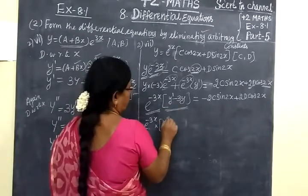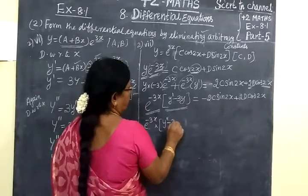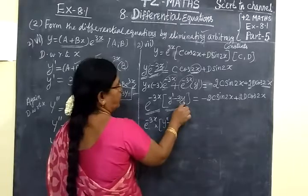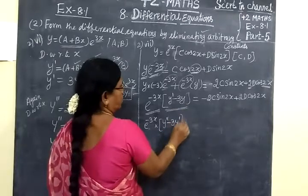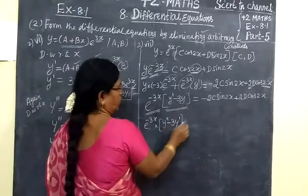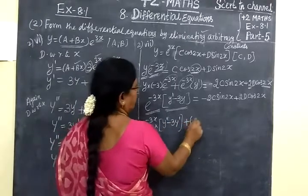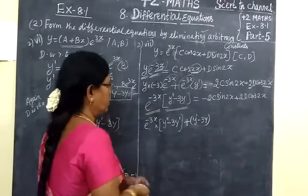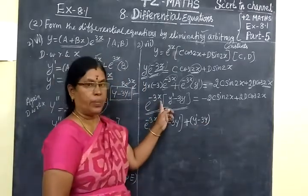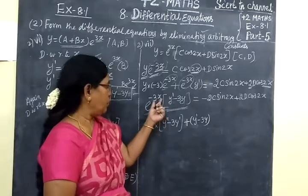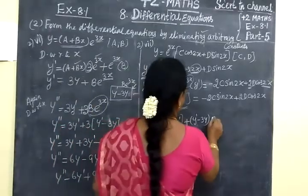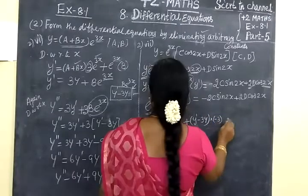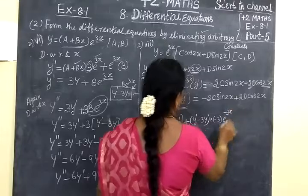We have the differentiation: y double-dash minus 3y dash. First function UV differentiation, plus second function into differentiation of first. When we differentiate e^(-3x), minus 3 comes down, so we write into minus 3 then e^(-3x). Second function written as it is, then differentiated, giving minus 3.